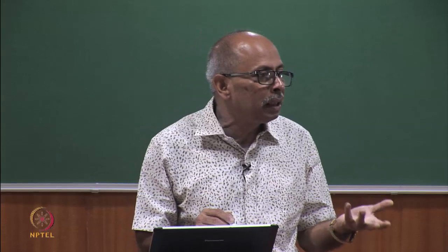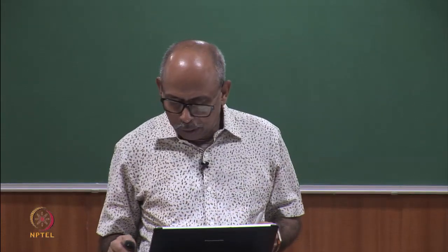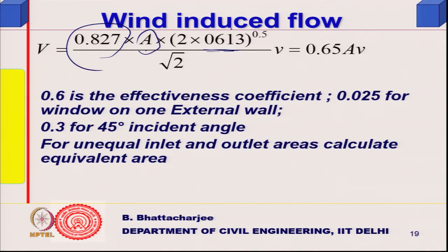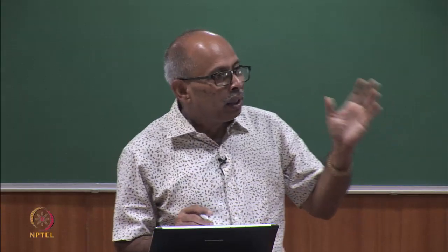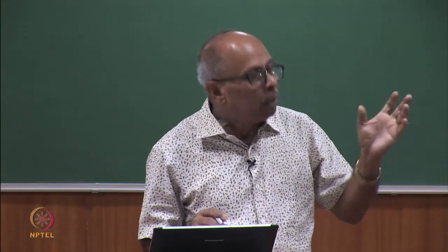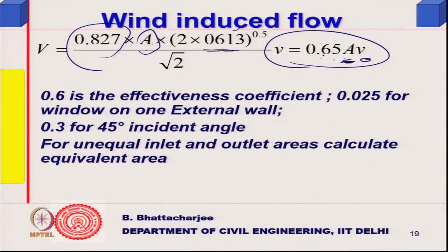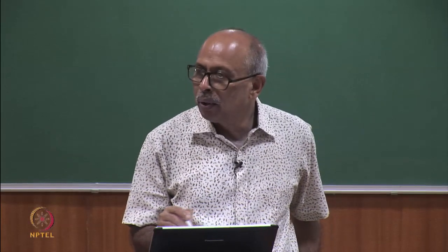Since 1.2 divided by 2 is 0.6, we get 0.613. With two pressure terms and root-2 from the equivalent area, this coefficient works out to roughly 0.65·A·v, where v is the outside air velocity. The accepted value is taken as 0.6.